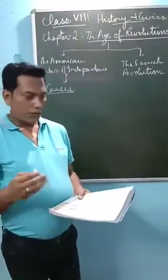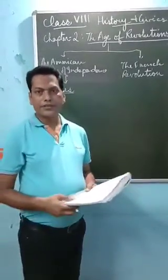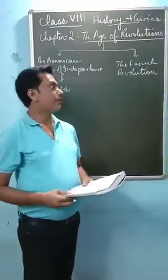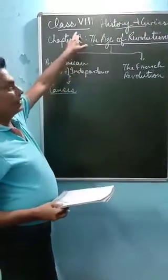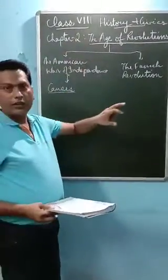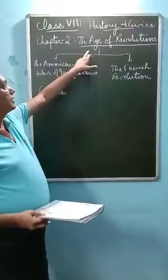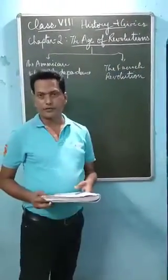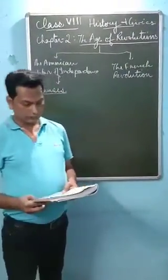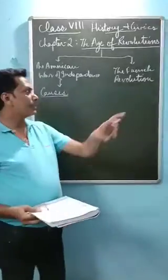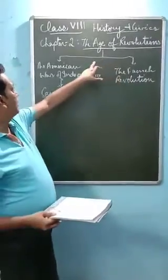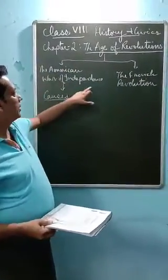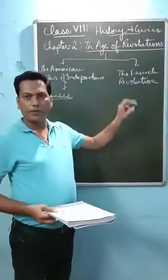Hello children, today we are going to study the second chapter in history and civics for class 8. The name of the chapter is the Age of Revolutions. In this lesson, we are going to study about two revolutions: the American War of Independence and the French Revolution.